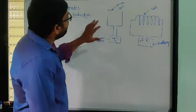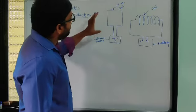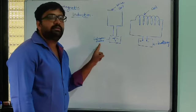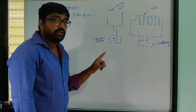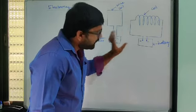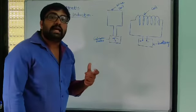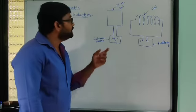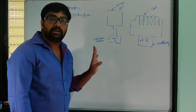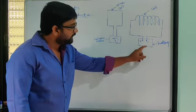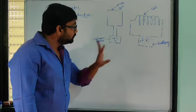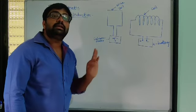Now we consider another coil. This second electric coil is connected to a galvanometer. The key difference is that this second coil is connected only to the galvanometer — we do not give any direct electrical connection to it. Only the first coil is connected to the battery.